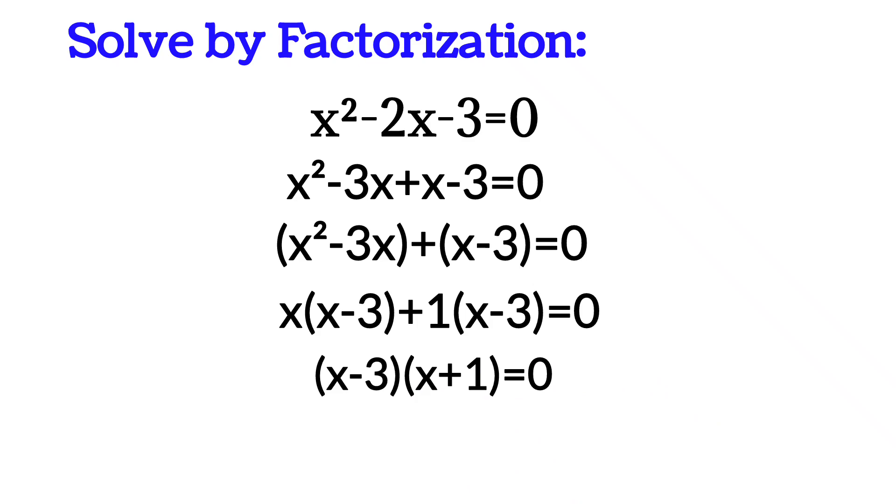If you multiply two numbers and you create zero, that means either the first one is zero or the second one is zero, or both of them are zero. So x - 3 = 0, or x + 1 = 0. From here, either x = 3 or x = -1. Okay, let's go